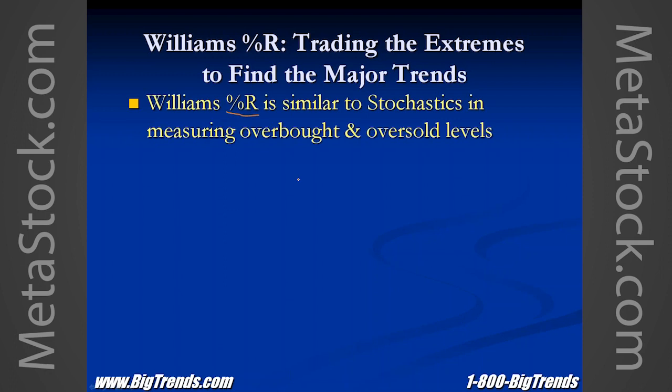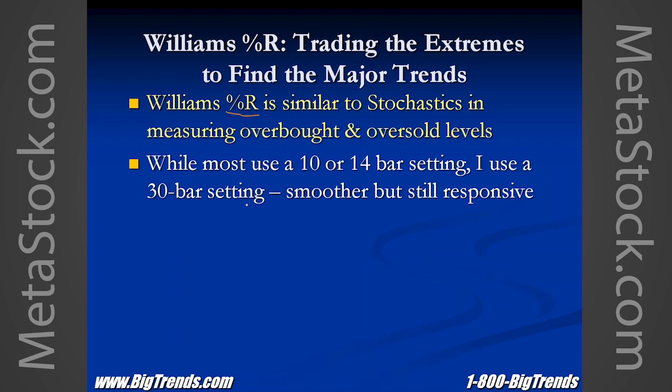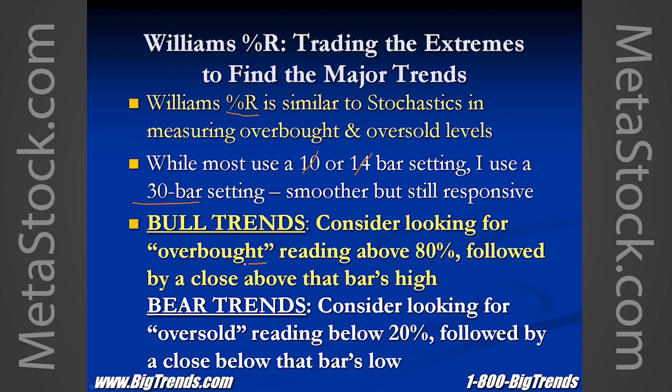Williams percent R — the percent range indicator developed by Larry Williams — is like a stochastic or an RSI, looking for overbought and oversold levels. Most are using a 10 or 14 bar setting. My testing says for the way I like to use it — turning it into a trend indicator — I'm actually looking at the last 30 periods of action. So on a daily chart, it's the last 30 days; on an hourly chart, it's the last 30 hourly bars — about the last four days. It's going to smooth out some of that normal whip that percent R will show you and still allow you to trade this kind of unusual pattern.